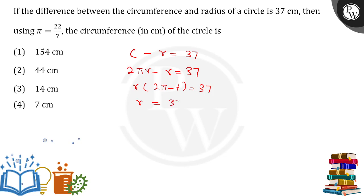What is 2π - 1? Let me calculate this first. Using π = 22/7, we have 2 × 22/7 - 1.